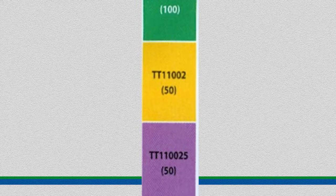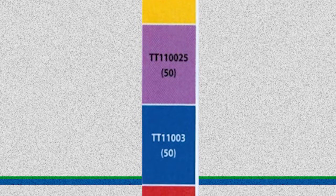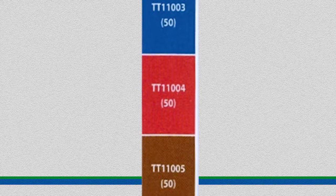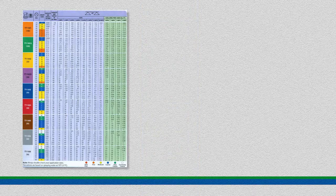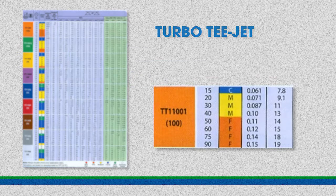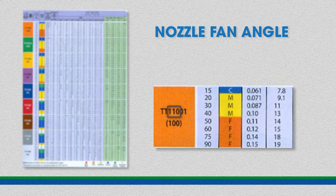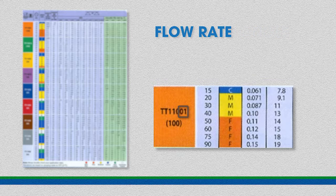The far left column lists all the orifice sizes available for this nozzle type, with each color code representing the orifice size. At the top we have orange — that is the TT 11001 — all the way to white at the bottom, TT 11008. Each orifice size has 'TT' at the beginning, referring to Turbo T-Jet. The next three numbers, '110', refer to the nozzle fan angle — when operated at 40 psi, it creates a flat fan pattern 110 degrees wide. The last two digits represent the flow rate: for '01', put a decimal between the 0 and 1, giving 0.1 gallons per minute at 40 psi.